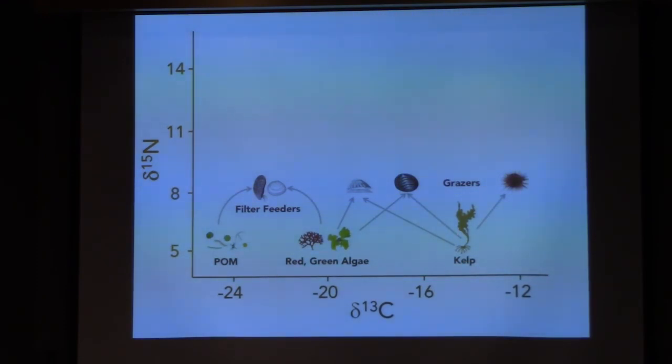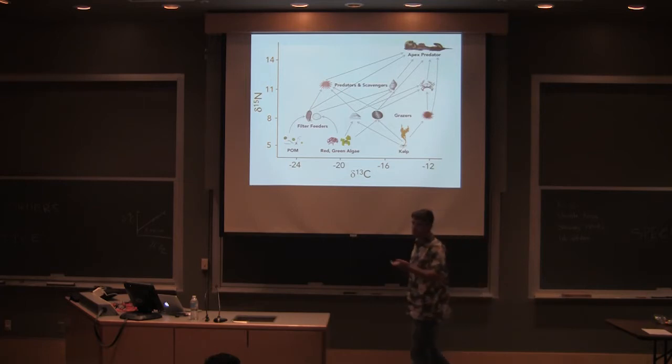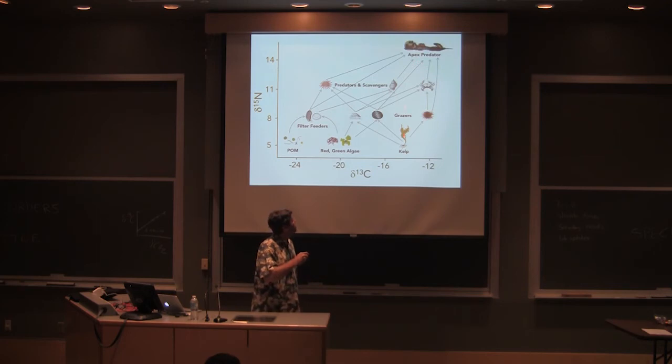And then you can look at different secondary consumers, predators and scavengers, and what their isotopic composition is like. And what Emma is actually interested in is this apex predator up here that eats everything, and what their isotopic composition is like. And what Emma's question is, or one of the questions she's addressing with her dissertation, is of the carbon in this animal, how much comes from that versus that?